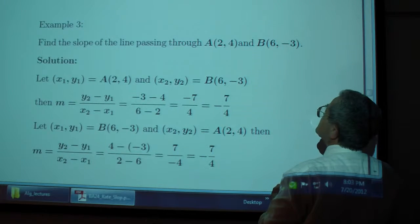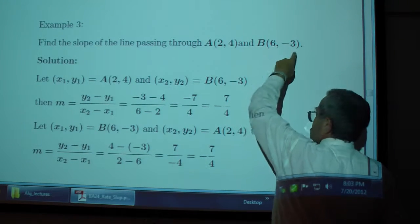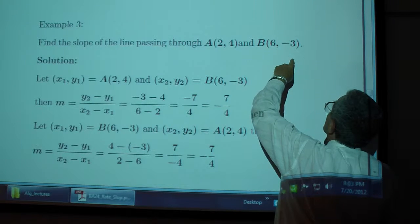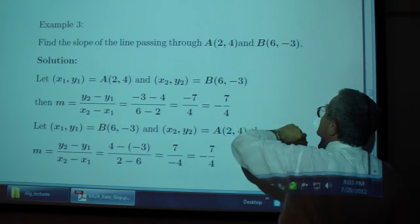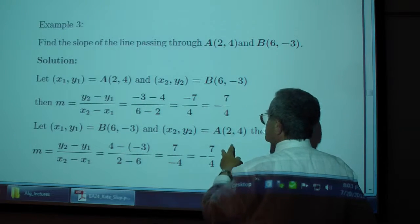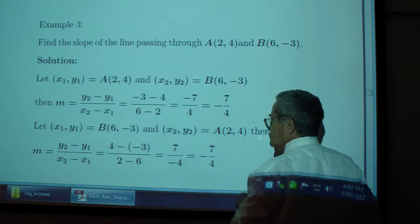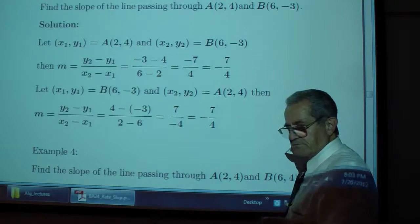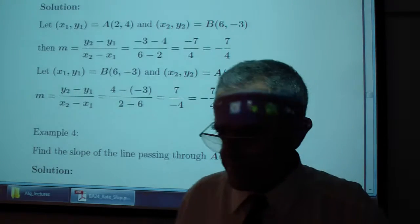Or, I could say 4 minus 3, correction, 4 minus negative 3 over 2 minus 6, which also gives me -7 over 4.